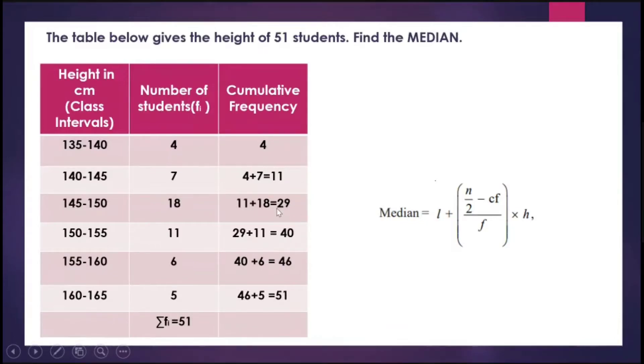So the class interval 145 to 150 is the median class. I repeat, N by 2 is 51 by 2, which is 25.5. The cumulative frequency more than 25.5 and closest to 25.5 is 29. The class interval corresponding to that, 145 to 150, is the median class.